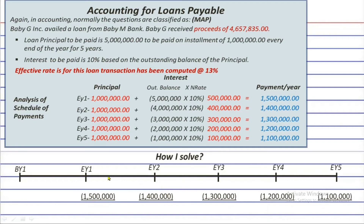Here is the timeline with the scheduled payments. There is no need to compute the present value because it was already given in the problem. This will grow, and we're fortunate the effective rate was also given. So: 4,657,835 × 1.13 = 5,263,354; minus the first payment of 1,500,000 gives a carrying value of 3,763,354. Then 3,763,354 × 1.13 = 4,252,590; minus the second payment of 1,400,000 gives a carrying value of 2,852,590.